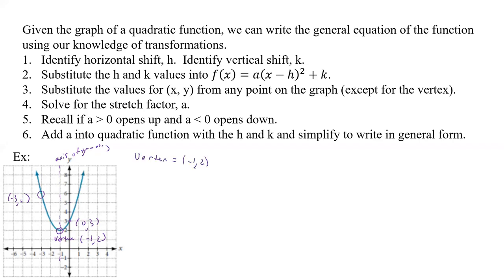So let's write down what we have. The vertex is negative 1, 2. We have the x, y point for part 3, which is going to be 0, 3. Now, if we use our point we just found, we can get our a because we're going to use what we have for x and y, and our h and k. If we write that, we have f of x equals a times x minus h. Well, h is negative 1, so it's going to be x plus 1, squared, and then plus k, which is 2. So we've shifted up 2 and shifted left 1.